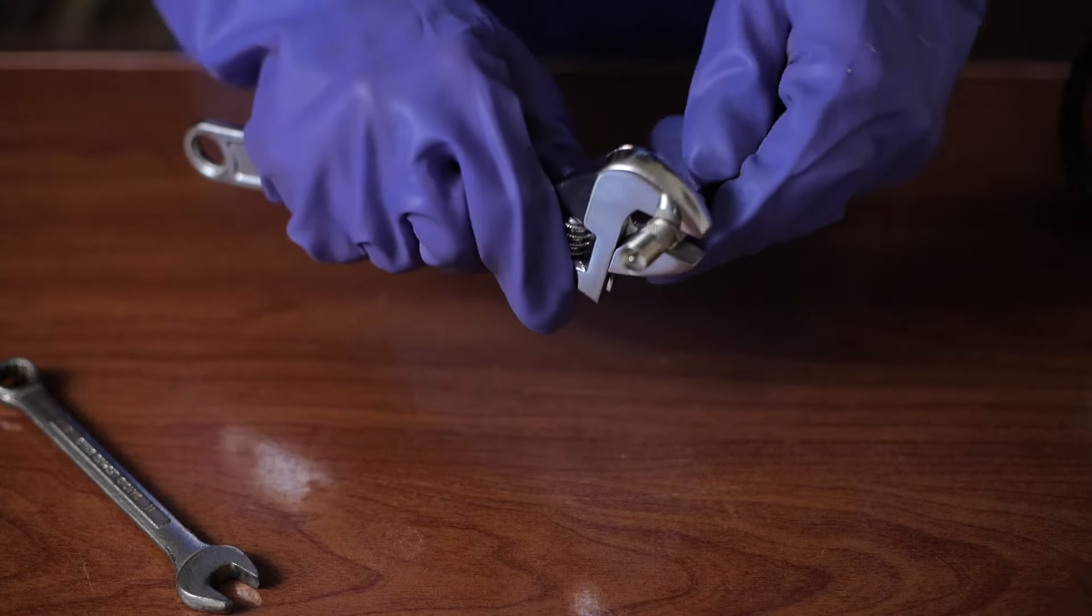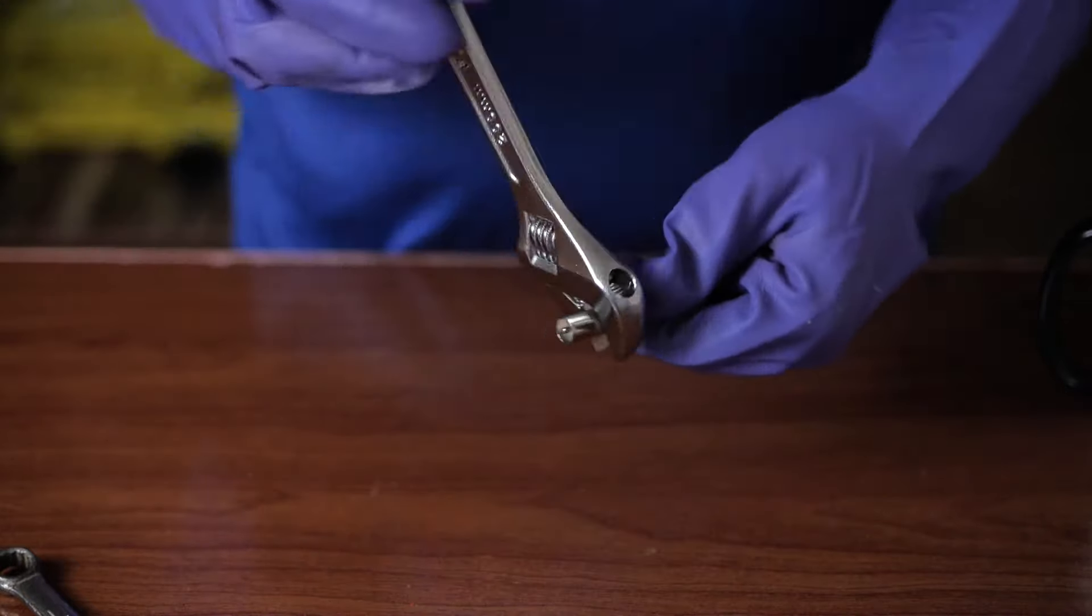To do this with a wrench, adjust the tool to match the size of your cable cord, as we mentioned earlier. Once it fits around the cord, start twisting it anti-clockwise to unscrew the cable.